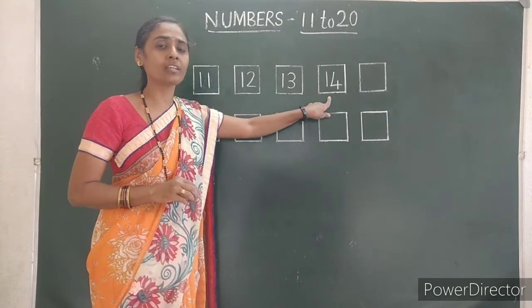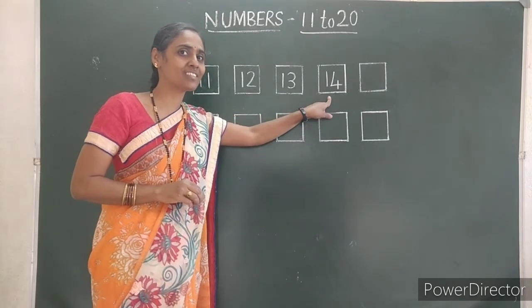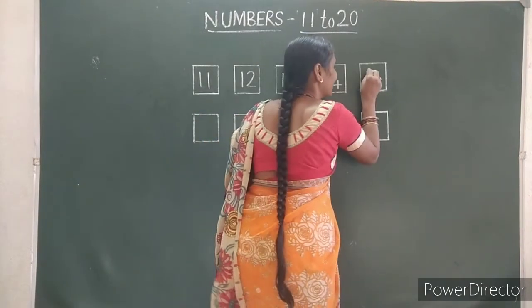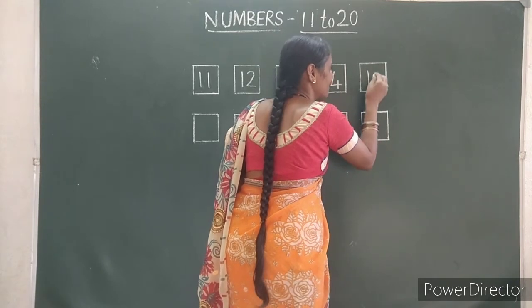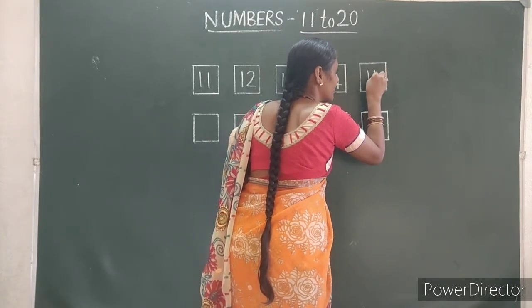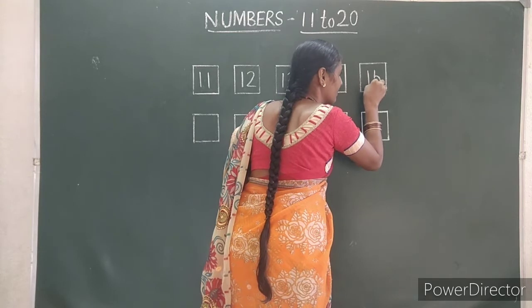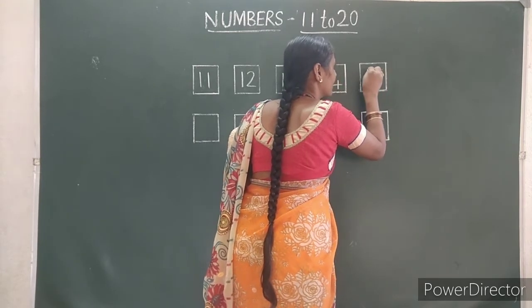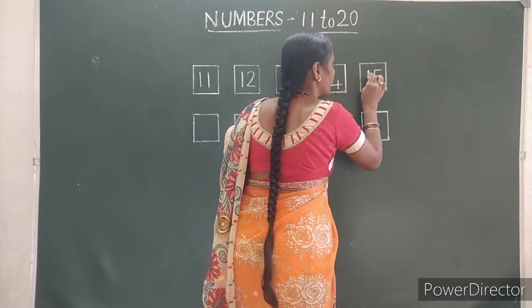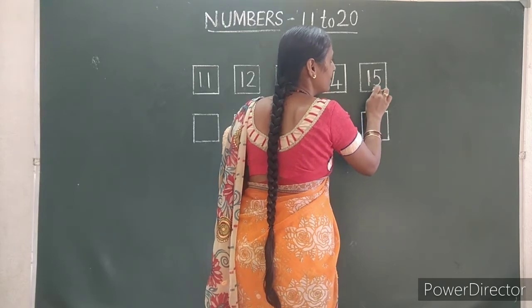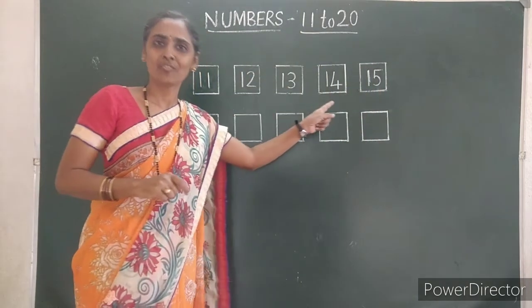After 14, which number comes? Fifteen. One. One. Five. Fifteen.